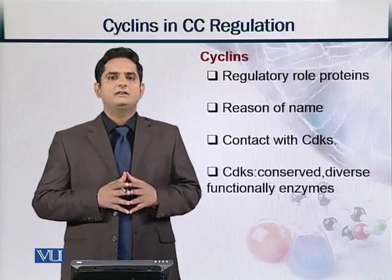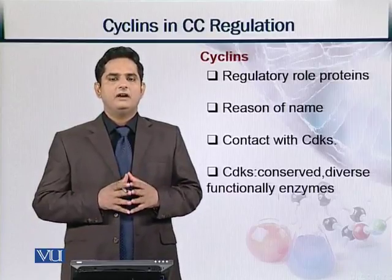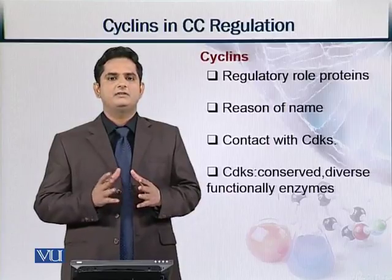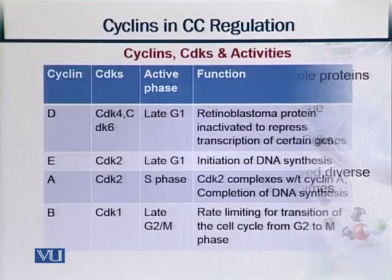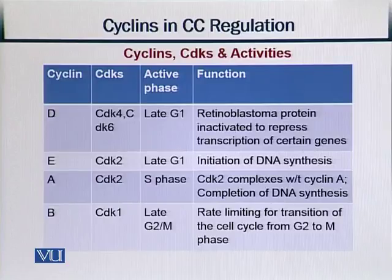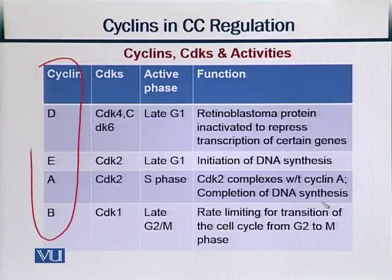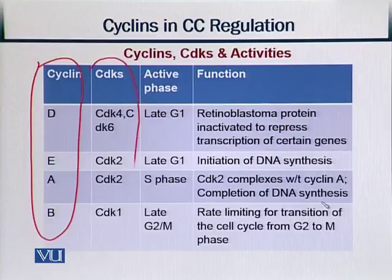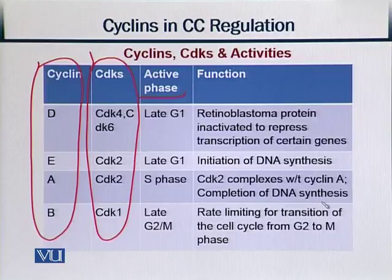To see which cyclins directly interact with CDKs, a table is presented here showing four different cyclins — A, B, E, and D — in the first column, and different CDKs in the next column. Then we have the active phases, indicating in which cell cycle phase each partnership is active, and finally their functions.